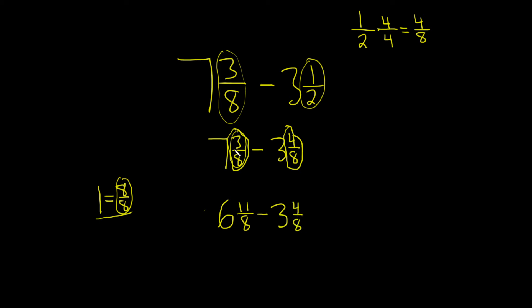Again, you have 7 and 3 eighths and you want to make this number bigger. So you write the 7 as a 6 and that gives you a 1 to work with. You say, okay, how can I write 1 as a number over 8? Well, 8 over 8. Then 8 plus 3 is 11. So you add it back to the fractional part. Super awesome.